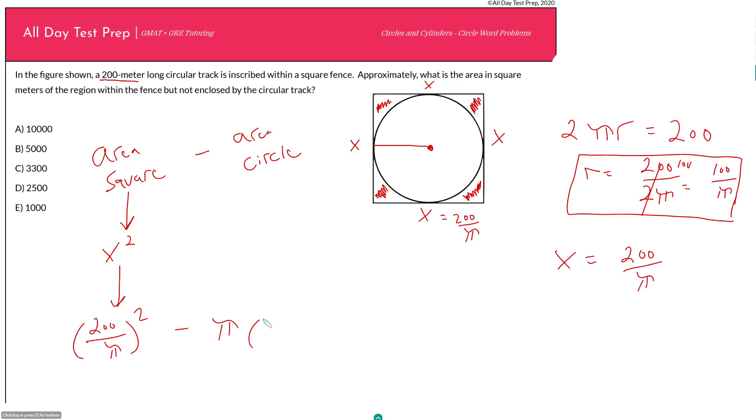Now this is often the case with geometry questions involving circles, especially in real world situations, where you're going to have to estimate what π is. Because π is approximately 3.14, but you should know sometimes you can get away with just estimating it as 3. And I would say the way you gauge that is based on how spread apart the answer choices are.